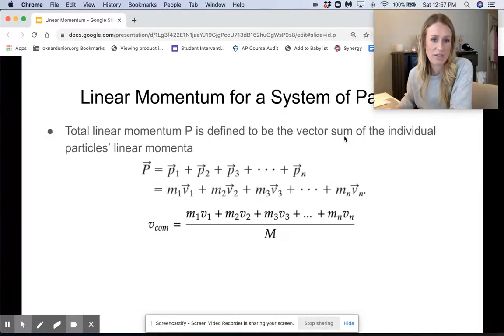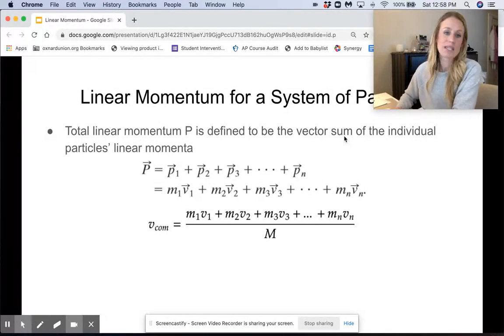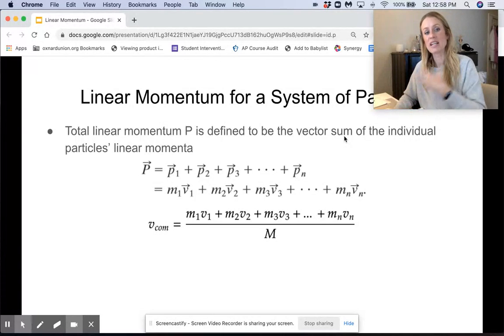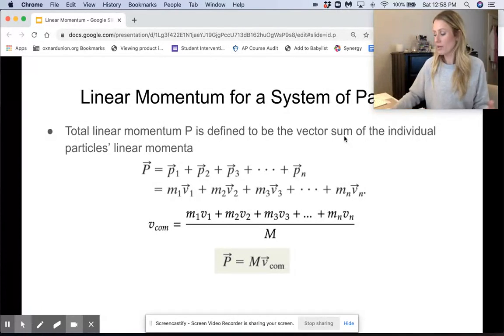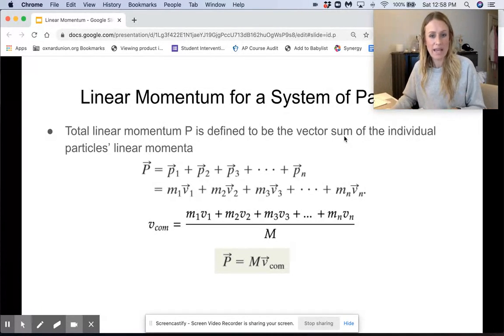In order to find the velocity of the center of mass. So if you multiply both sides of this by big M to get that M1V1 plus M2V2 plus M3V3 and so on by itself, which is our linear momentum for the system of particles, then all you get is this. So your momentum for the system of particles will just be equal to big M times the velocity of the center of mass. And that's pretty self-explanatory.